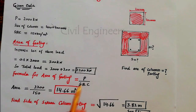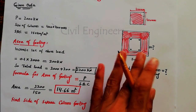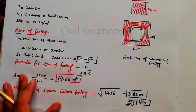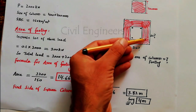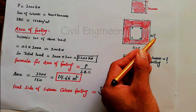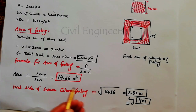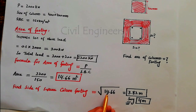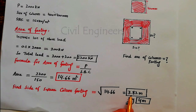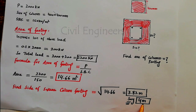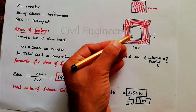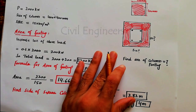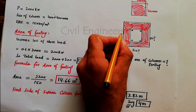We should provide 14.66 meter square area for this footing. To find the side of the square column footing, we take the square root of the area: square root of 14.66 equals 3.82 meters, so we say 4 meters. Each side of the column footing should be 4 meters.